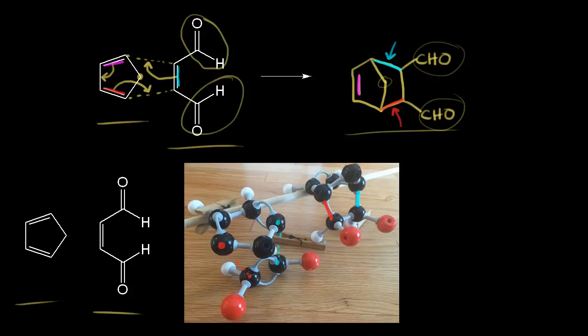We need to think about the stereochemistry of the diene first. We look at our cyclopentadiene and we have this bridging CH2. We know that inside substituents go up, so on our model set here is that CH2 and here are the bonds leading to it. When we form our product, that CH2 goes up in space.